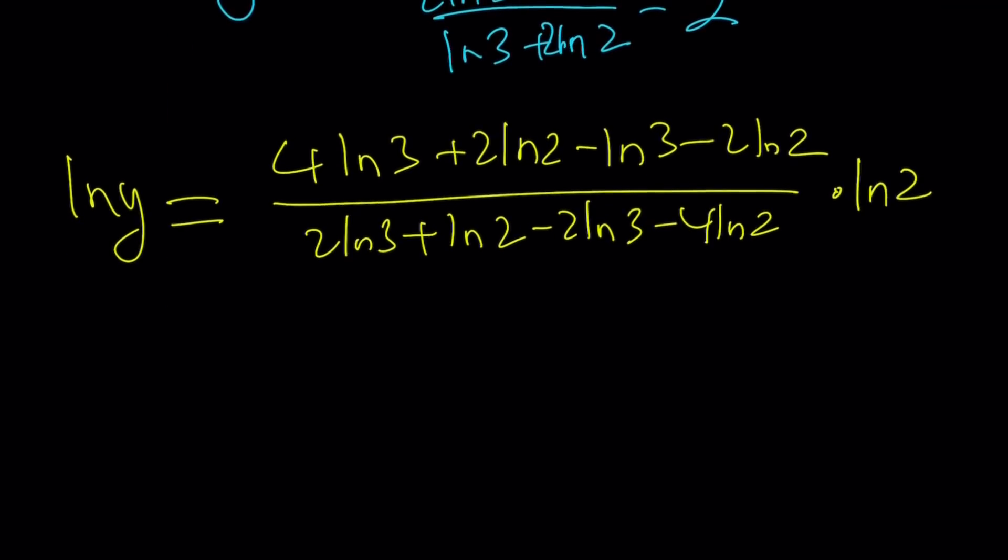this is going to be multiplied by ln 2. Let's not forget that, right? So far, I got this expression, and don't worry, it's going to simplify. First of all, notice that these are going to cancel out.